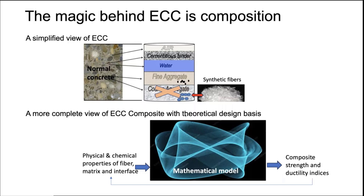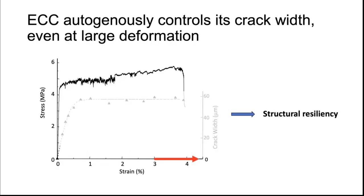The mathematical model ensures these three phases interact in a manner that results in a ductile composite. There is a theoretical design basis for ECC with plenty of publications for those interested. Looking at a real stress-strain curve from a pulled ECC specimen, the specimen goes elastic and then into strain hardening, with small load jumps reflecting micro cracks forming along the length. This ductility gives rise to designing resilient structures that resist failure by brittle fracture.